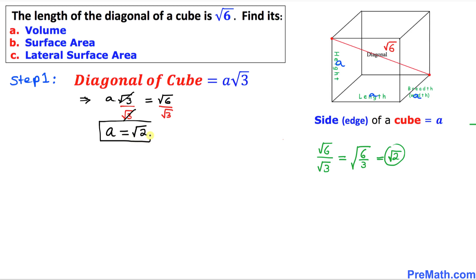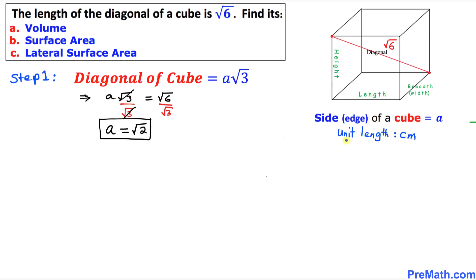Here is the reasoning: square root of 6 divided by square root of 3 can be written as the square root of 6 over 3 under the same radical, and that reduces to square root of 2. The unit length in our case is going to be centimeter.